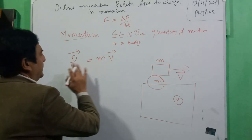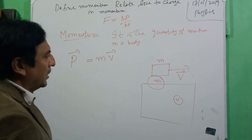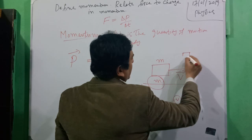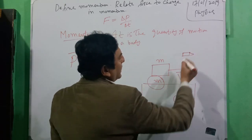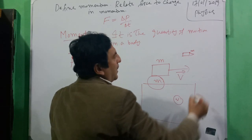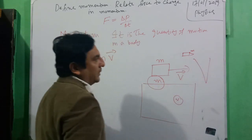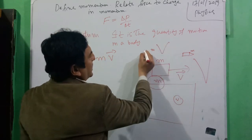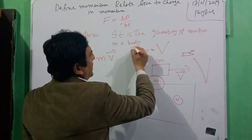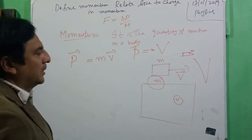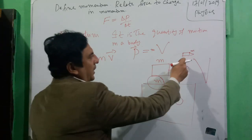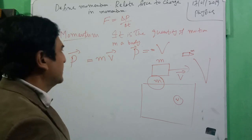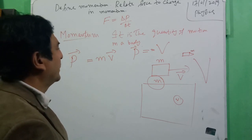Another example is a bullet fired from a gun. Here the mass is very small, but the speed is very large. So the product of mass and velocity will be greater. If this bullet hits something, it will penetrate it, because the momentum of the bullet is very large.